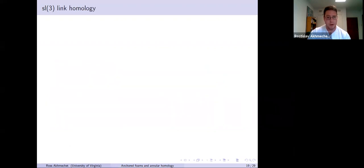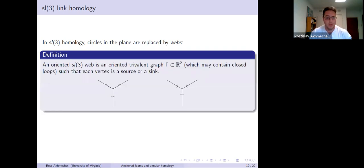Let me give a very brief outline of SL3 link homology with really no details. In the SL3 story, circles in the plane which appeared in the SL2 story are rather replaced by webs. An oriented SL3 web, I'll probably just say web, is an oriented trivalent graph gamma embedded in the plane. It also may contain closed loops which have no vertices but are still oriented.